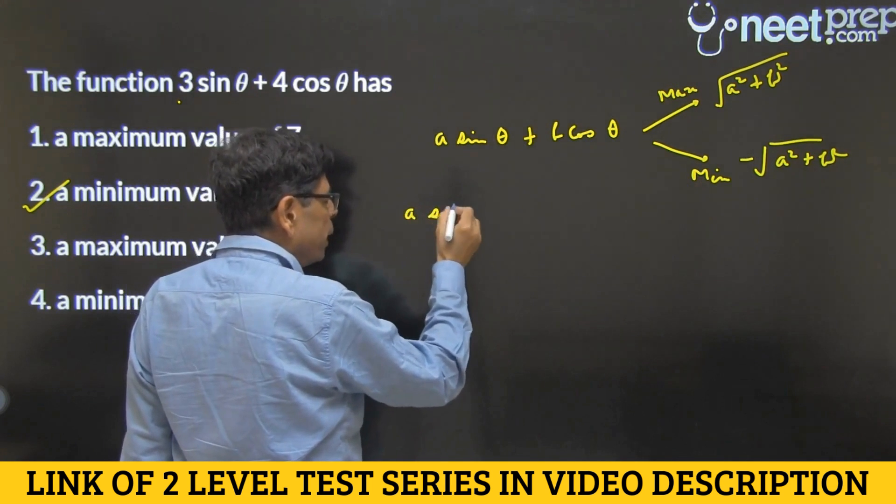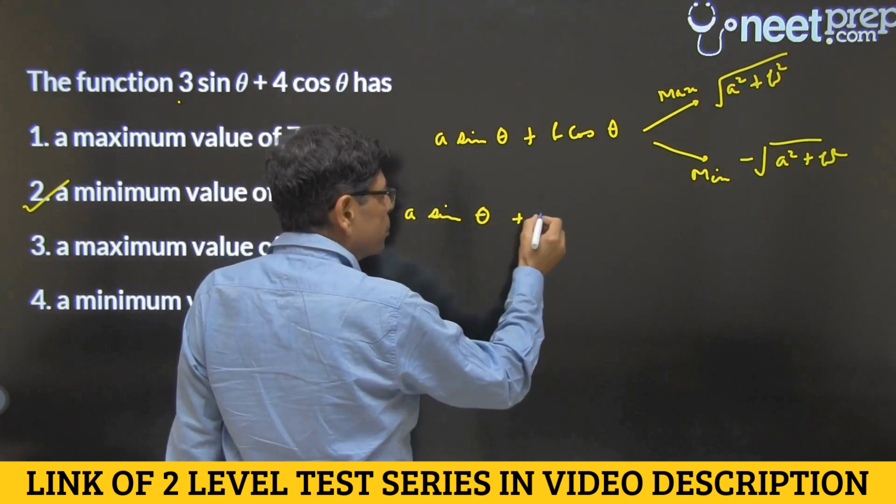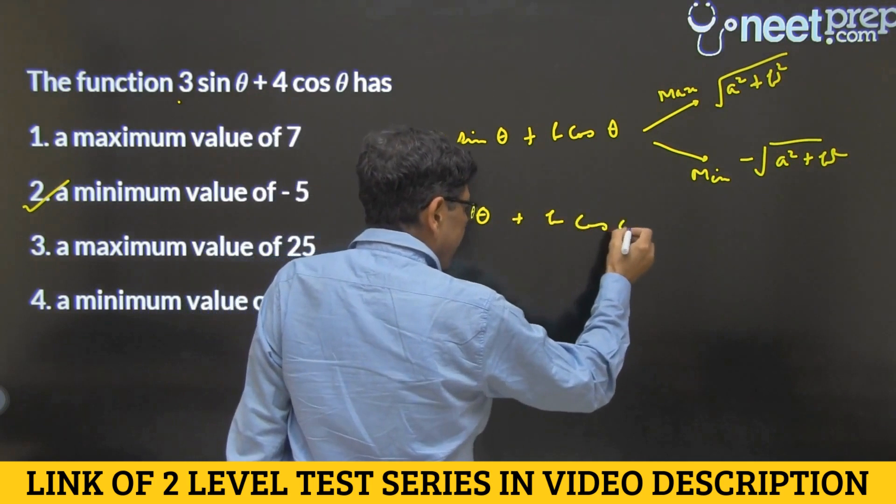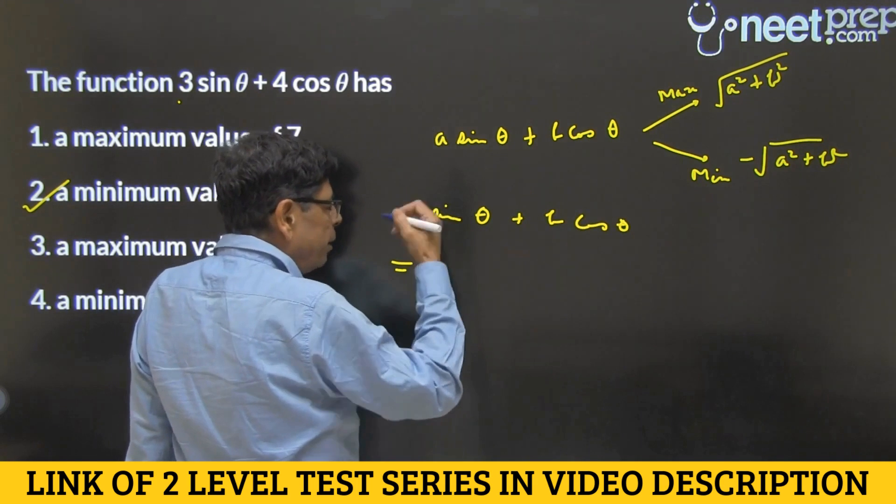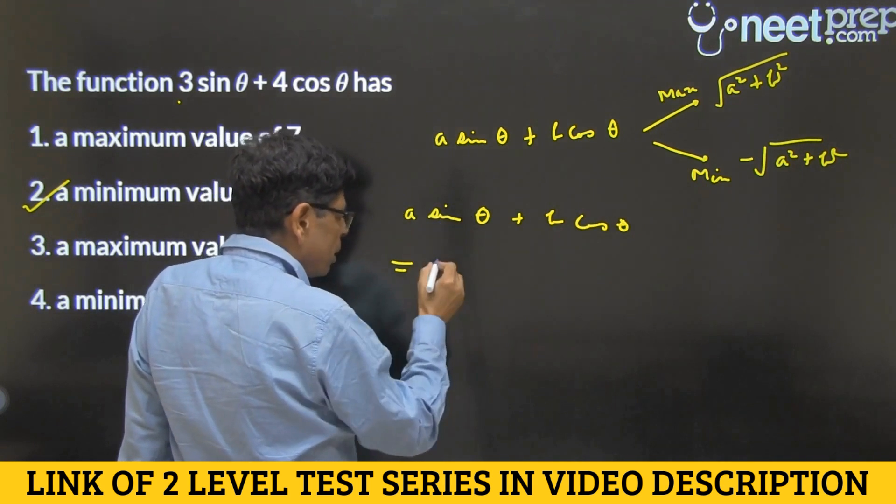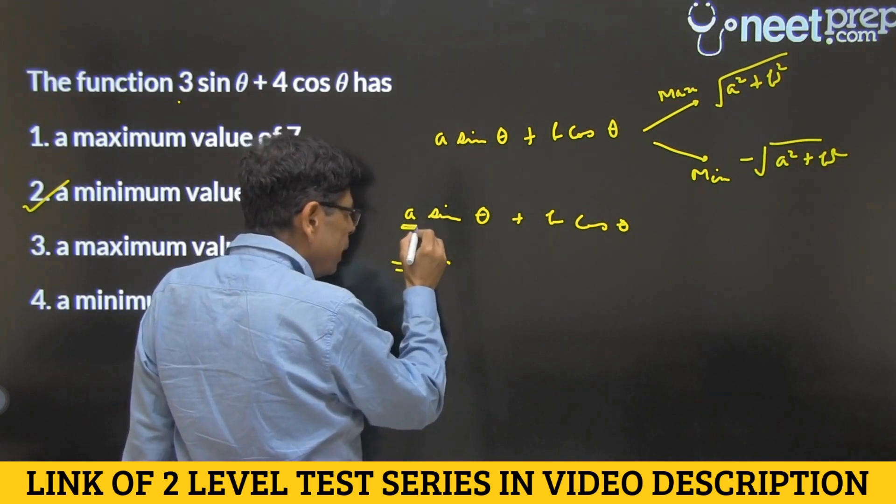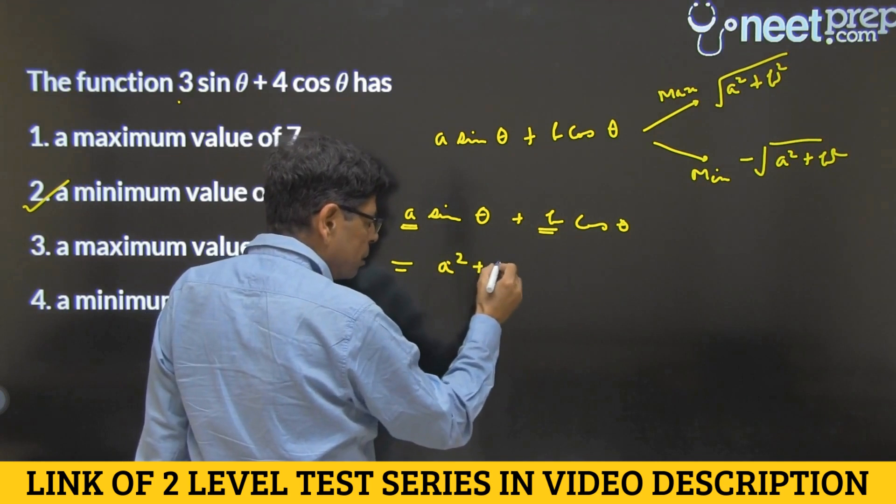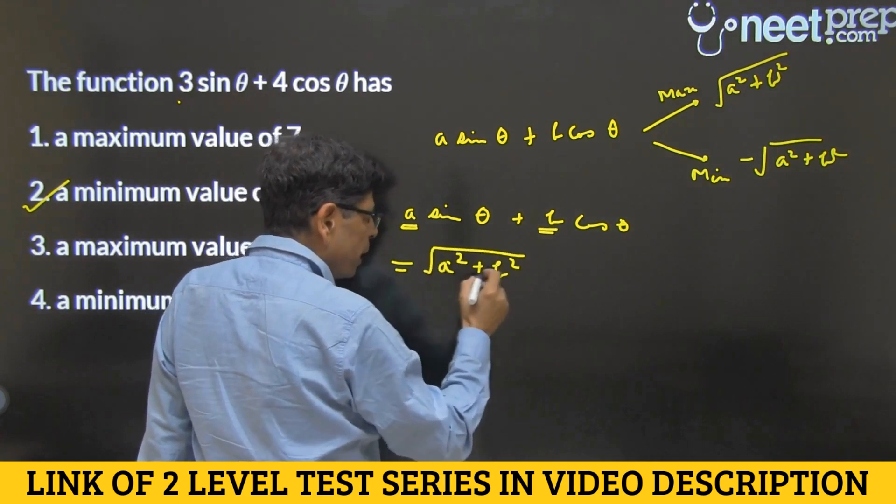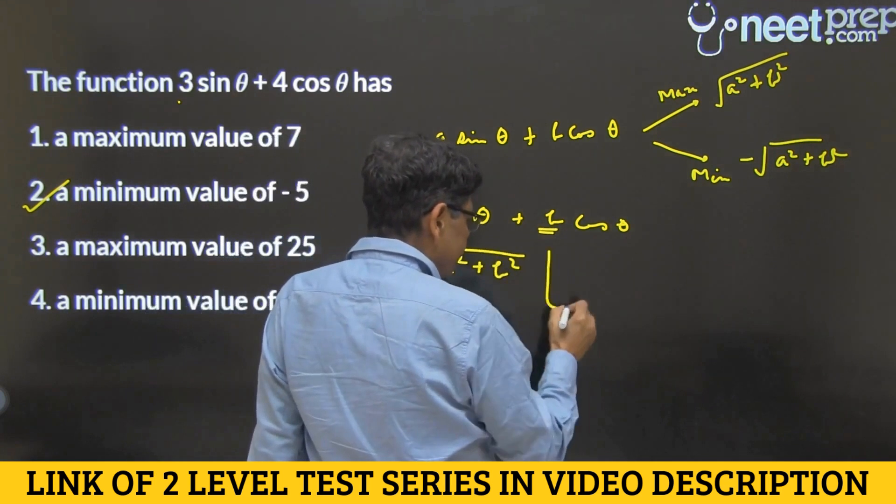Asin(θ) + Bcos(θ) can be written as, we divide and we multiply by √(A² + B²). So here I am multiplying first √(A² + B²) and then I divide by the same here.